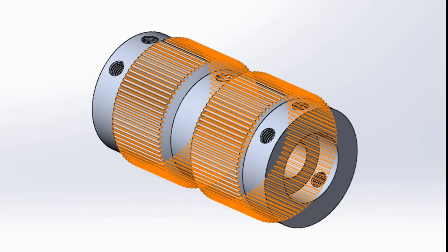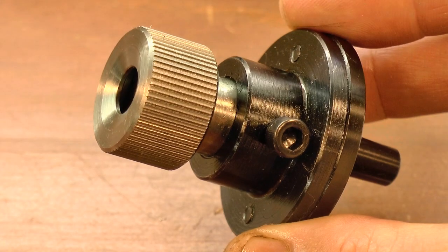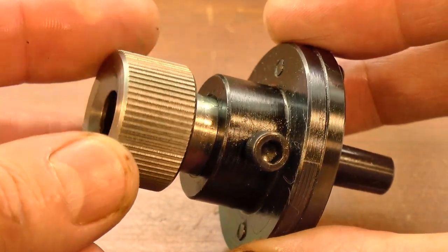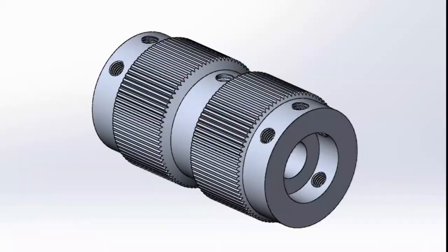The grip pattern I'm using is consistent with some other Sherline accessories, like this little tool that holds watchmaker collets. I'm going to put in a series of close mill grooves around the perimeter to give it a similar straight knurl look.